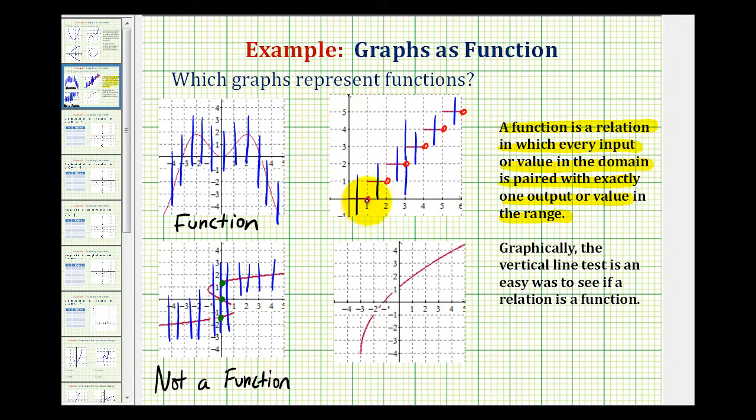Therefore, the vertical lines will only intersect this graph at one point and therefore, this does pass the vertical line test and is a function.